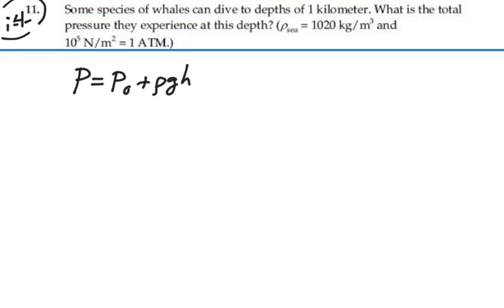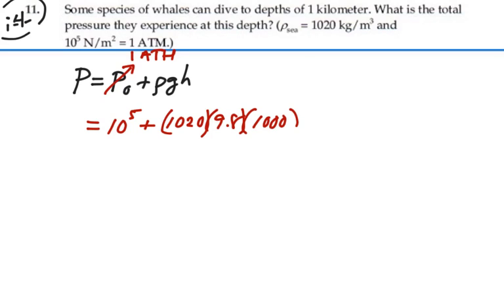In this case, the pressure at the top will be 1 atmosphere because that will be the pressure just above the ocean. And so this is going to be equal to 10 to the 5 pascals for the atmosphere, plus the density of water, 1,020 times 9.8, and if we're 1 kilometer down, we are 1,000 meters down.